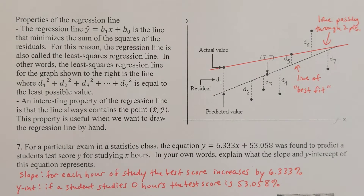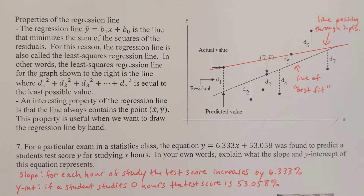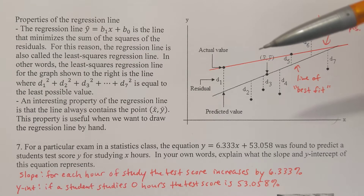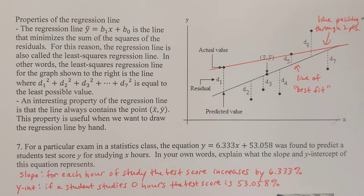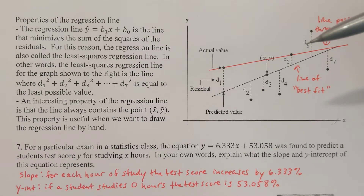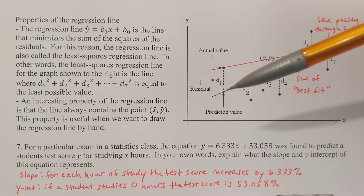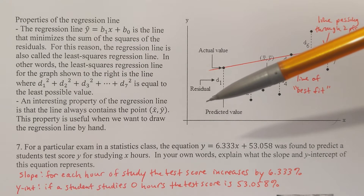Properties of the regression line: the regression line y-hat equals b₁ times x plus b₀ — that's the same as y equals mx plus b, just using different symbols. It's the line that minimizes the sum of the squares of the residuals. For this reason, the regression line is also called the least squares regression line. An interesting property is that the line will always contain the point x̄, ȳ — where x̄ is the sample mean of the x's and ȳ is the sample mean of the y's. This property is useful when we want to draw the regression line by hand.